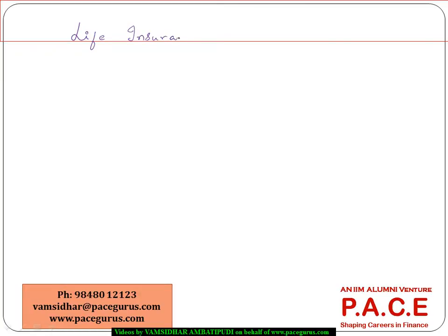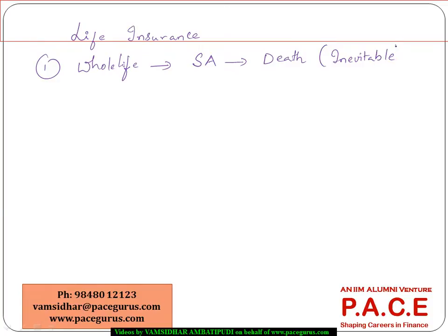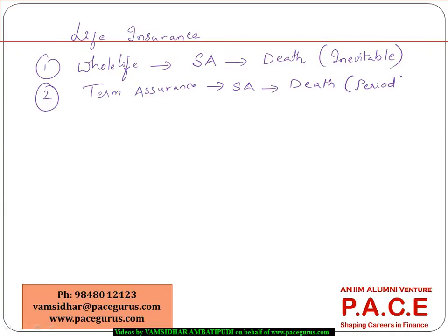Looking at the world of life insurance, the simplest policy is whole life — as the word itself says, the benefit called sum assured is paid on the death of the policyholder. Death is inevitable and can happen at any point in time, so the benefit would be paid at some point; there is no time limit. Whereas in a term assurance policy, the sum assured is paid on death, but only if death happens during a specific period. If death happens after that period, no benefit is paid.